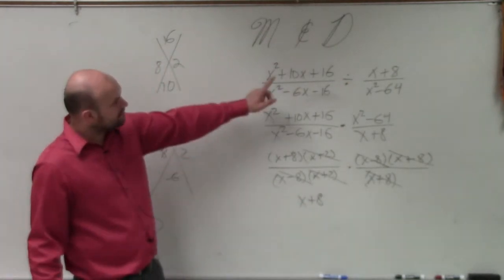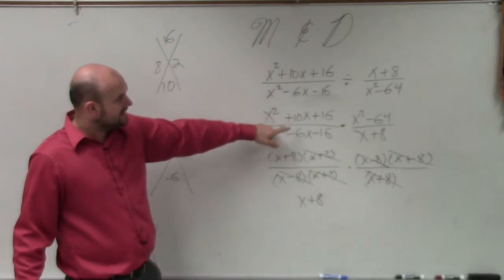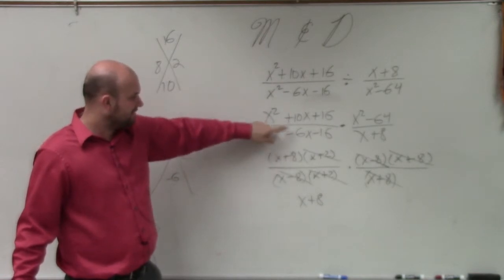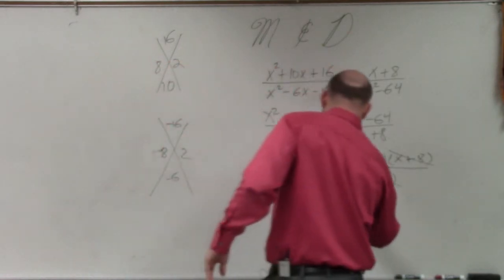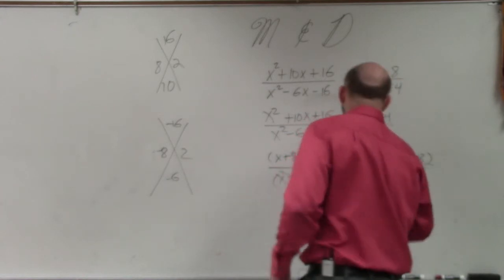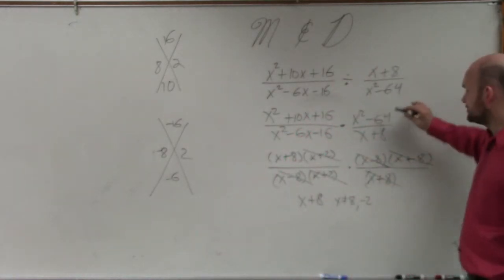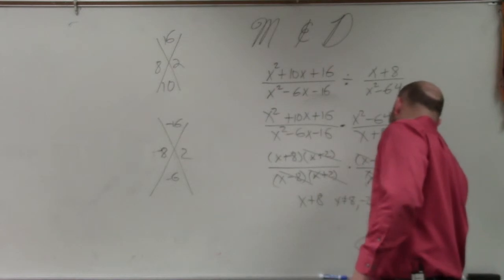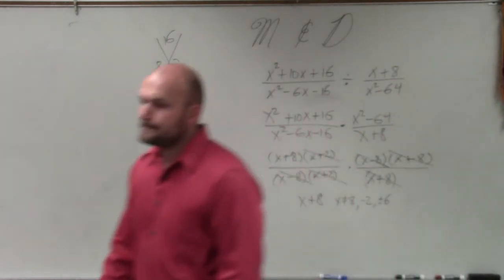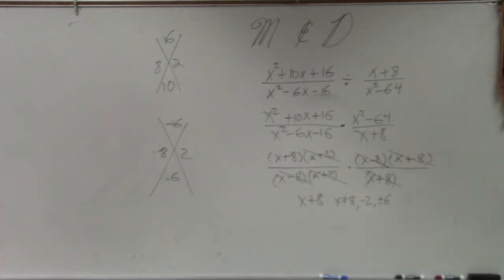However, going back to my original problem, I want to see what were all the different factors on my denominator. So I know that x cannot equal 8 and negative 2, as well as my original denominator, it cannot equal plus or minus 6. And then that is it.